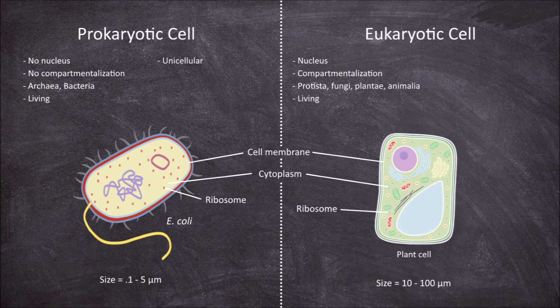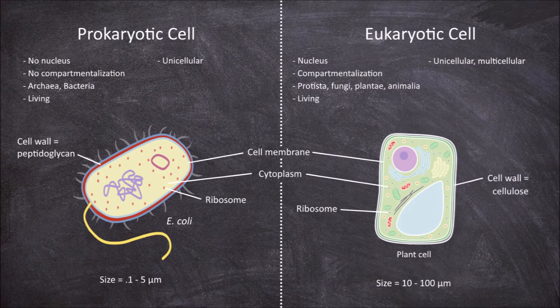Prokaryotes are always unicellular, whereas eukaryotes can be either unicellular or multicellular. Cell walls are found in some members of both the prokaryotes and eukaryotes, but what they are made from differs. In prokaryotic cells that have a cell wall, it is made from peptidoglycan. In eukaryotes it is made from either chitin, in the case of fungi, or cellulose, in the case of plant cells.